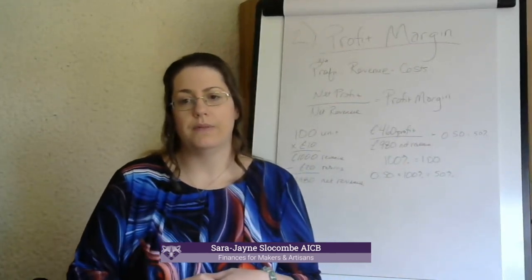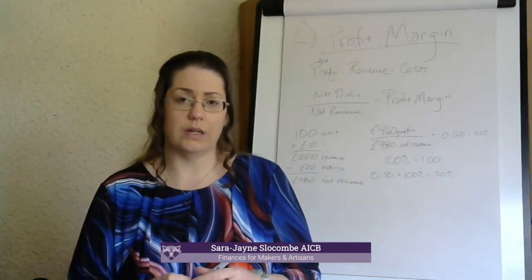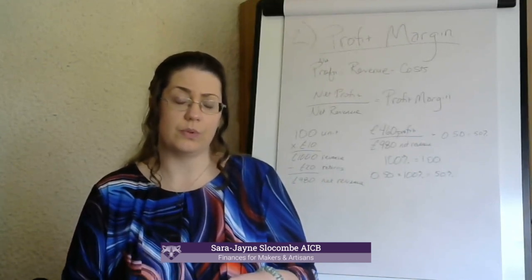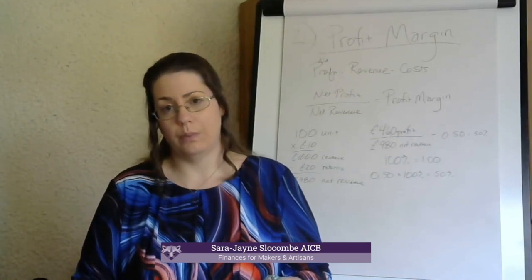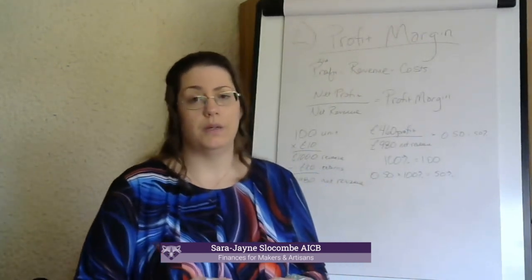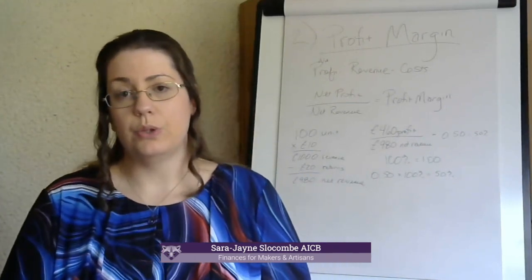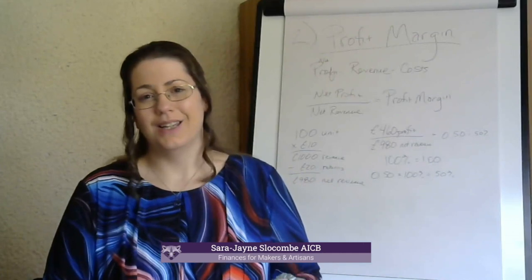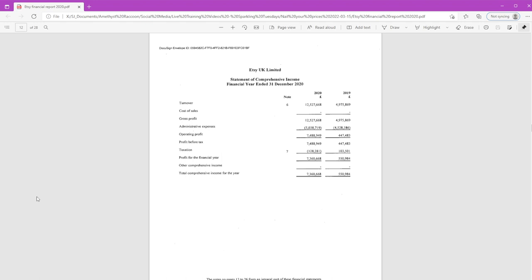I'm going to go on a little tangent and talk about company profit margins. I found this information while doing research for this, and I think it's something you should know. You can do this yourself on any company that files public reports — any limited company in the UK that isn't a micro company. What I did was go to Companies House and find Etsy UK's financial statements. The most recent one is for the year ending 31 December 2020.